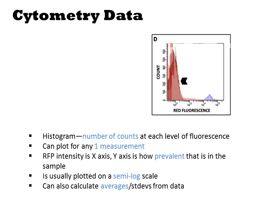In panel D, we have a different type of plot called a histogram. Here we plot the number of events that were observed for a narrow range of measured values. Here, they are computing the distribution of red fluorescence measurements within the population. So a dot plot compares two different measurements, while a histogram shows the distribution of only one measurement.